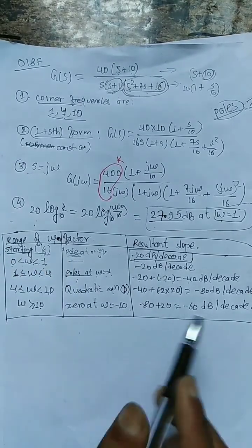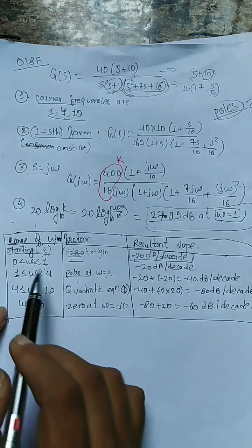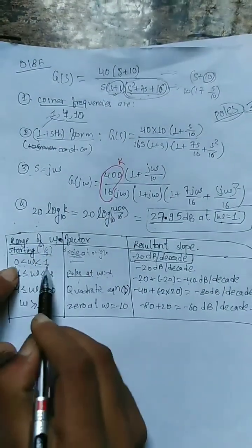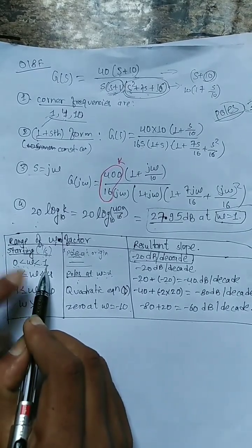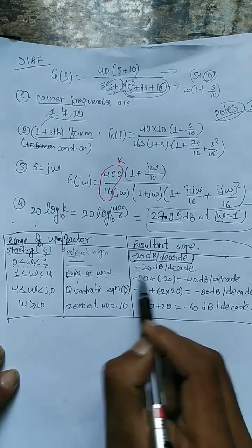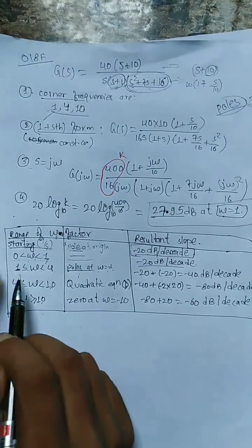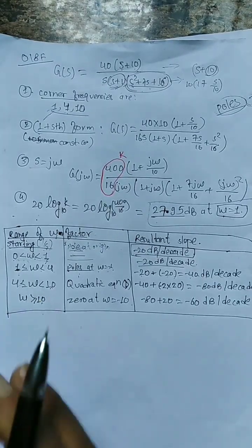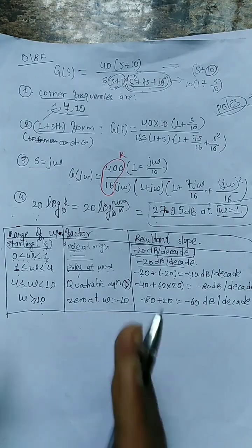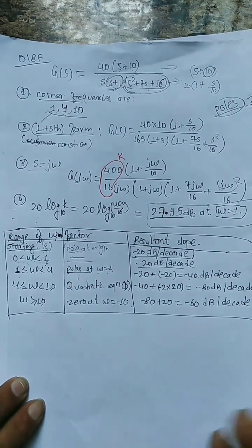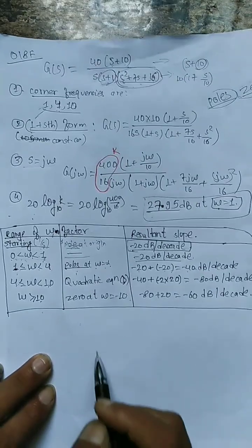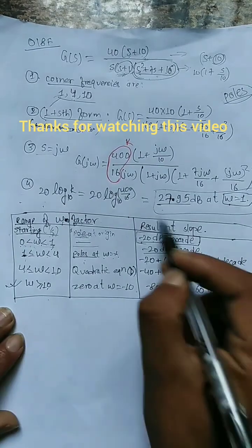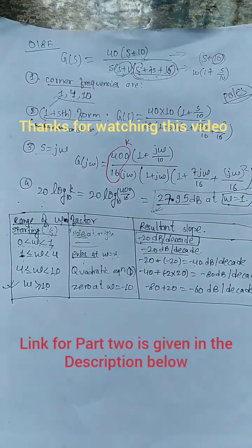At the first corner frequency, there is a constant behavior layer. At the second corner frequency, there is a slope change. At each corner frequency, a slope change occurs. Based on this table and information, we plot the asymptotic Bode magnitude plot.